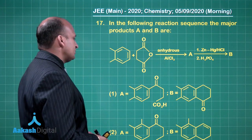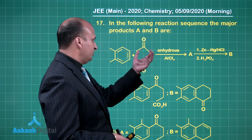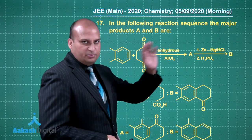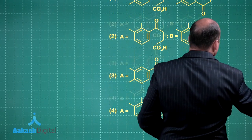In the following reaction sequence, the major products A and B are. So the reactants are given to us, the reagents are given, we have to find out what is A and what is B. Let us solve this question. Let us see what is happening step by step.